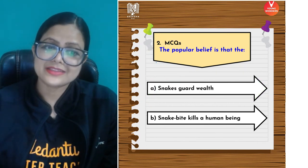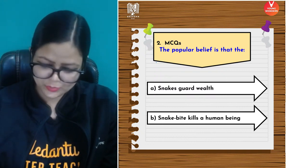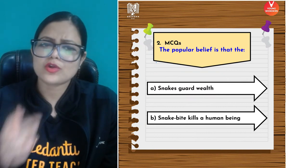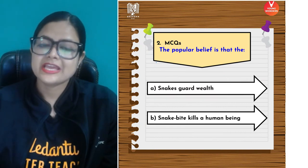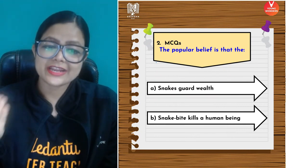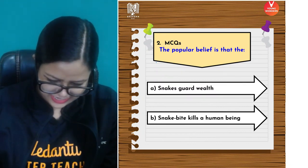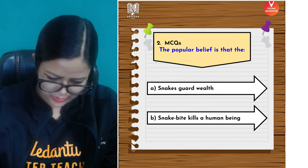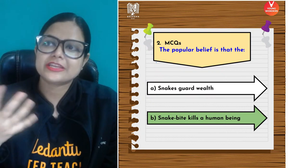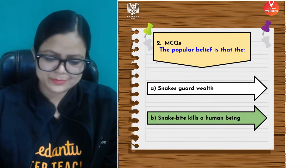The next question: The popular belief is that snakes — fill in the blank — guard wealth / snake bite kills a human being. What do people popularly think about snakes? Many people think that if a snake bites you, you will die. But that is not entirely the correct belief.